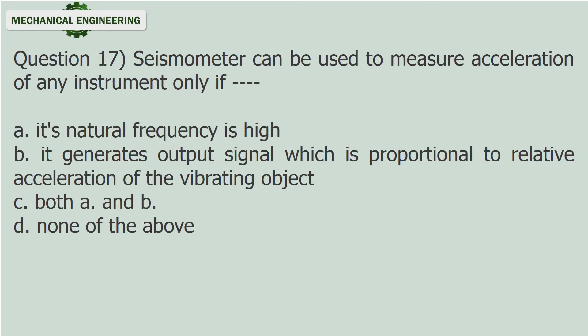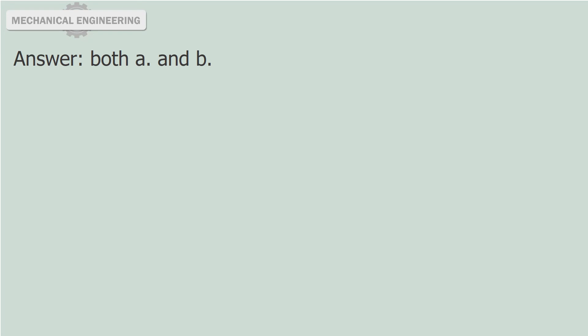Question 17: Seismometer can be used to measure acceleration of any instrument only if — fill in the blank. a. Its natural frequency is high. b. It generates output signal which is proportional to relative acceleration of the vibrating object. c. Both a and b. d. None of the above. Answer: Both a and b.